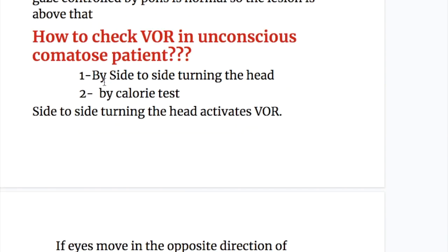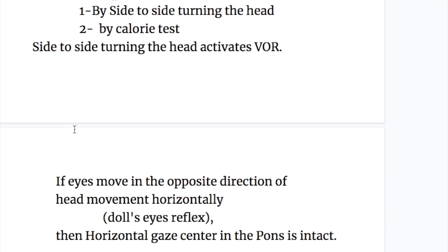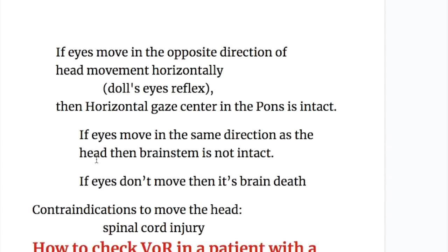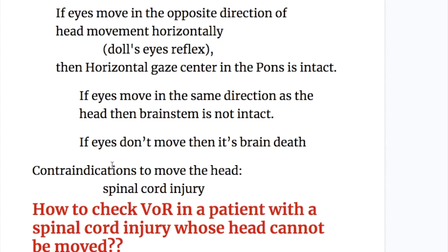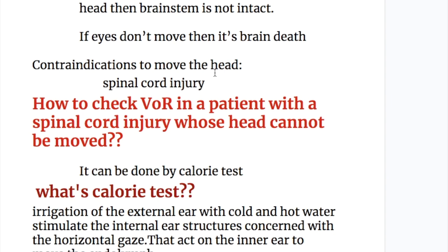How to check the vestibulo-ocular reflex in unconscious or comatose patients: number one, by side-to-side turning of the head; and number two, by caloric test. Side-to-side turning activates VOR. If eyes move in the opposite direction of the head movement horizontally — the doll's eye reflex — then the horizontal gaze center in the pons is intact. If eyes move in the same direction as the head, then the brain stem is not intact. And if eyes do not move at all, it indicates brain death. The contraindication to head movement is spinal cord injury.